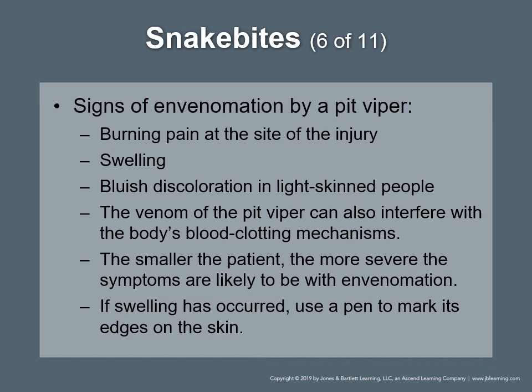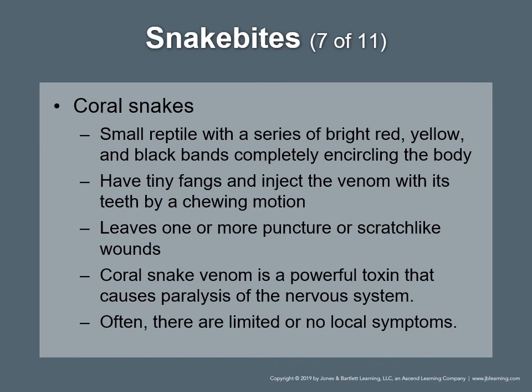Bluish discoloration may occur in light-skinned people. Pit viper venom can interfere with the body's blood clotting mechanisms. Other systemic signs may include weakness, nausea, vomiting, vision problems, seizures, sweating, fainting, changes in level of consciousness, and shock. The smaller the patient, the more severe the symptoms are likely to be. If swelling has occurred, use a pen to mark its edges on the skin. Coral snakes are small reptiles with bright red, yellow, and black bands — only the coral snake has red and yellow bands next to one another. They are relatives of the cobra, injecting venom with a chewing motion that leaves puncture or scratch-like wounds. Coral snake venom is a powerful neurotoxin causing paralysis of the nervous system; there are often limited or no local symptoms.